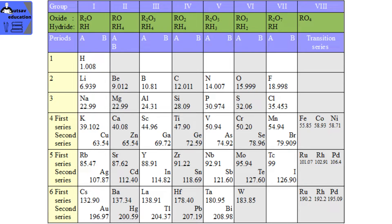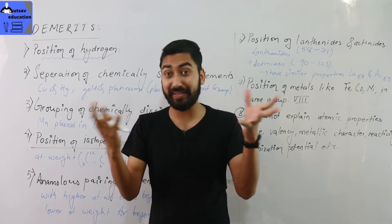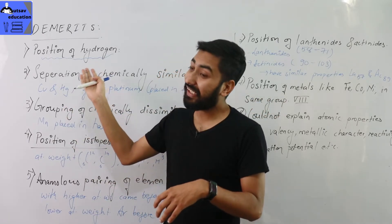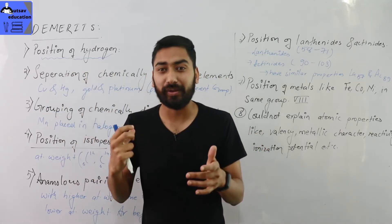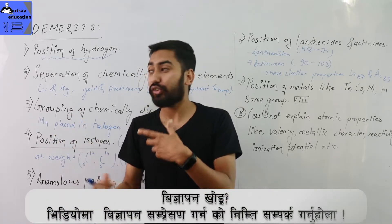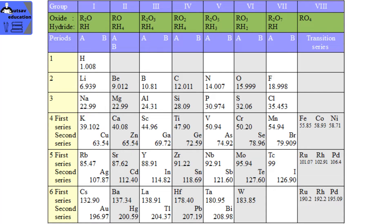Hydrogen can be placed in the first group with metals because it can lose one electron, but it also shares properties with halogens because it can gain one electron to complete its outer shell. So Hydrogen's position is ambiguous — it can fit into more than one group, and this is a major demerit of Mendeleev's Periodic Table.